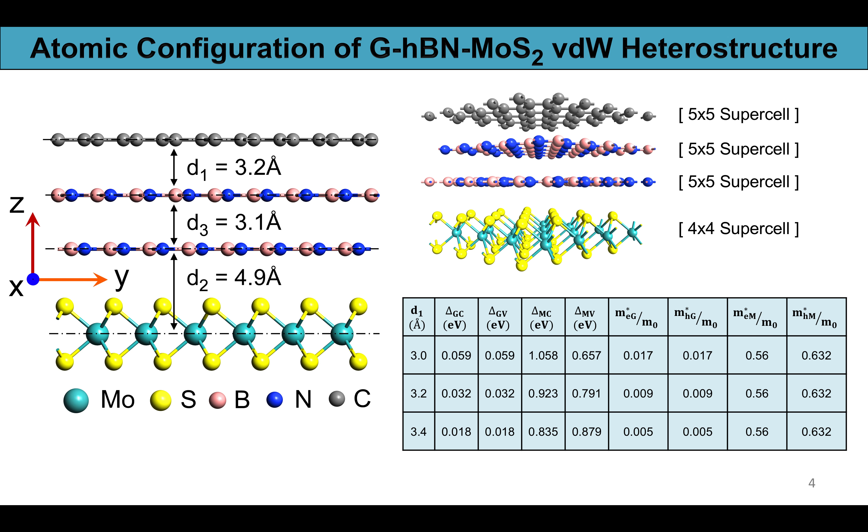Here the atomic configuration of the graphene-hBN-MoS2 van der Waals heterostructure is shown along with the equilibrium interlayer spacing between the different layers. In this work we have varied the interlayer spacing d1 from 3.0 angstrom to 3.4 angstrom.